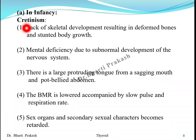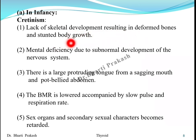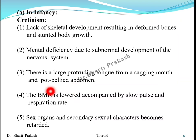In infancy and childhood, hyposecretion leads to a disease known as cretinism. Its characteristics include lack of skeletal development resulting in deformed bones and stunted body growth, mental deficiency due to abnormal development of the nervous system, a large protruding tongue from the sagging mouth, and pot-bellied abdomen. The BMR is lowered, accompanied by slow pulse and slow respiration rate, and secondary sexual characters become retarded.